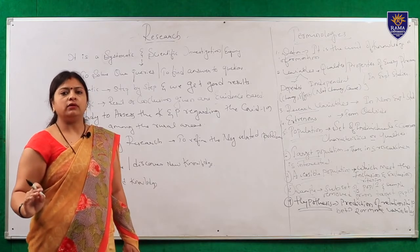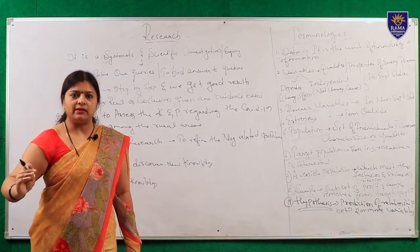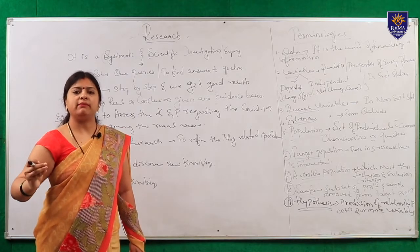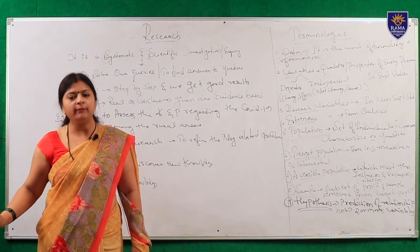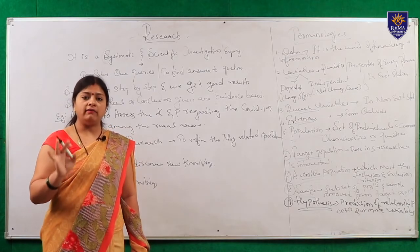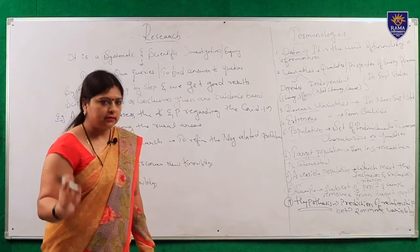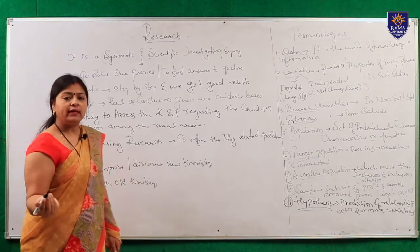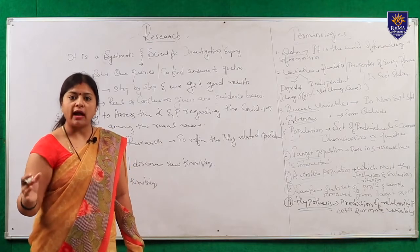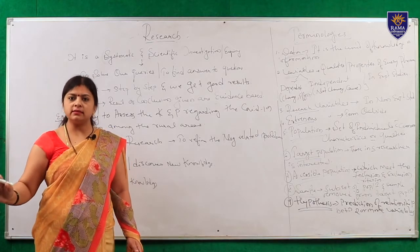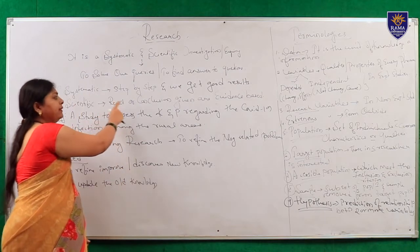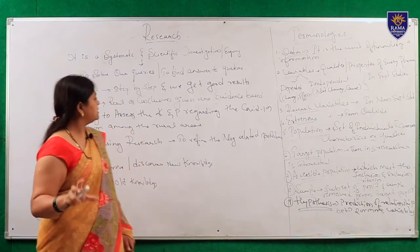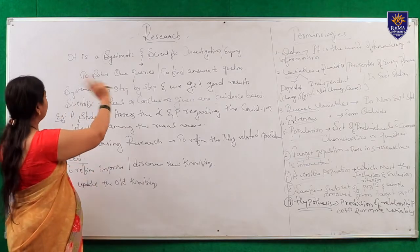Whenever we do any work, we do it step by step - beginning, then further steps. When we go step by step, our final result will be accurate. That is why research is called a systematic process. The other word is scientific. Why do we call it scientific? Because the conclusion we get after the study is based on evidence. We are doing evidence-based work. The results we are getting are proper results based on evidence, so that is why it is called scientific.